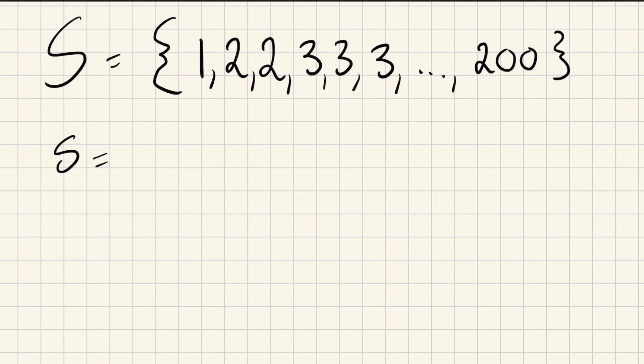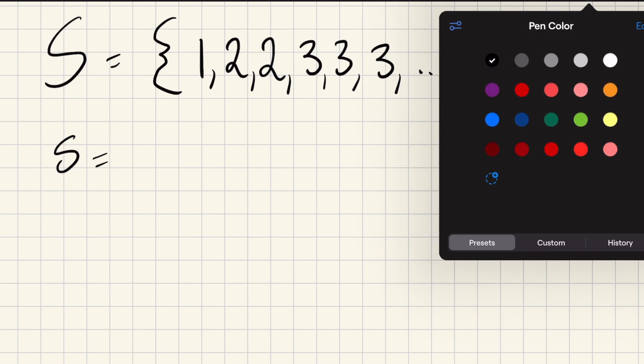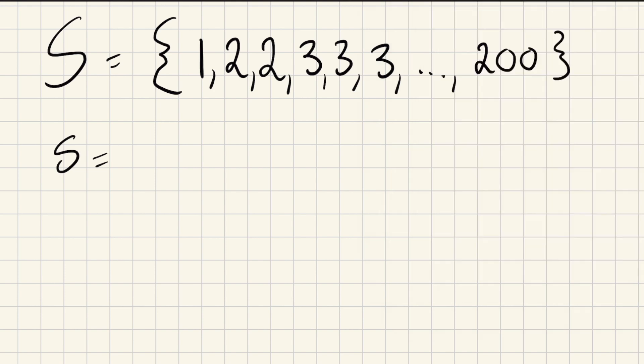Today we're going to be looking at this absolutely massive set made from one one, two twos, three threes, and so on, four fours all the way until we get to 200 two-hundreds, which I'm not going to be writing. We want to know what the median of this set is, what is the value that's right in the middle of it. Now this is really not straightforward because it's a big set, so we have to apply some certain techniques.